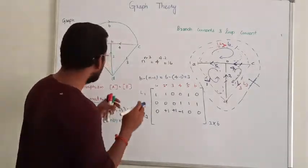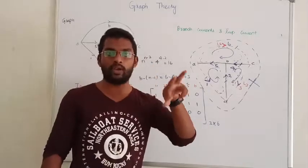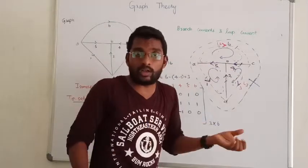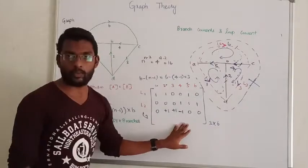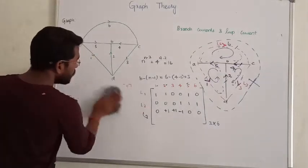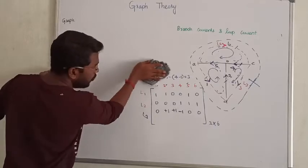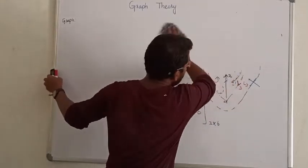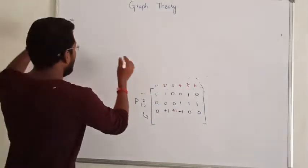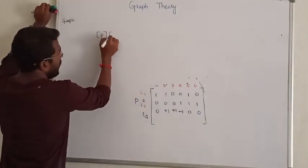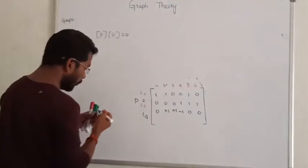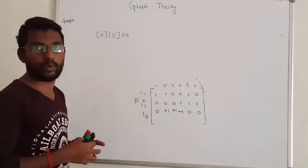I hope you all understand the logic. Tie set matrix forms a loop. The KVL equation is: matrix P multiplied by the branch voltage vector V equals 0. That is the general KVL loop equation in matrix form.